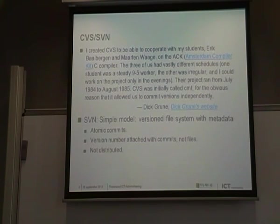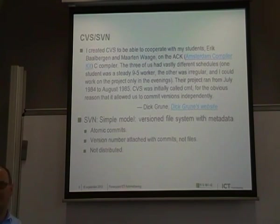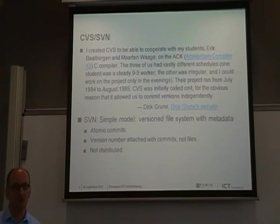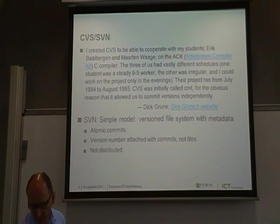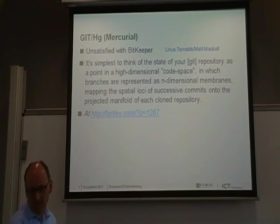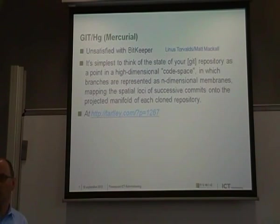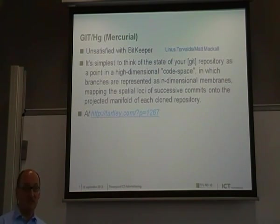Subversion was in fact designed to resolve that — it's CVS done better. That's also the goal of subversion. Subversion is also very popular. But it's not distributed. So now we are getting into the story. Now we are getting distributed. All the things that come to mind then are Git and Mercurial — I think they are the two most popular distributed systems.